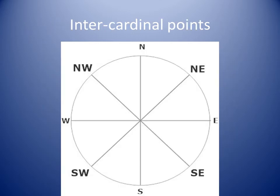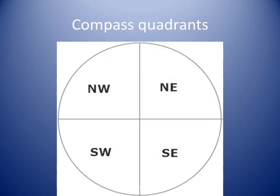The intercardinal points lie exactly in the middle between the cardinals. Northeast lies between north and east. Southeast lies between south and east. Southwest lies between south and west. Northwest lies between north and west. Sometimes an area is divided into sectors.